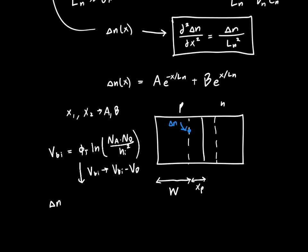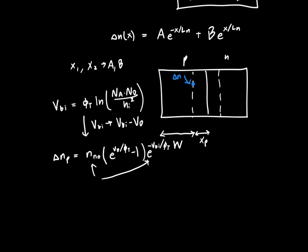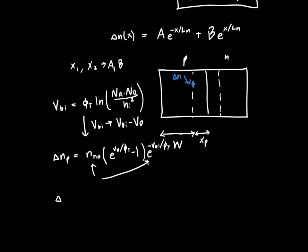And that was just that delta N on the p side was just equal to the electron concentration on the N side, which we generally know because we have the doping concentration, times E to the VD over phi t minus 1 times E to the minus VBI over phi t. Or we can group these Nn knots and E to the minus VBI over phi t into one physically more meaningful parameter.